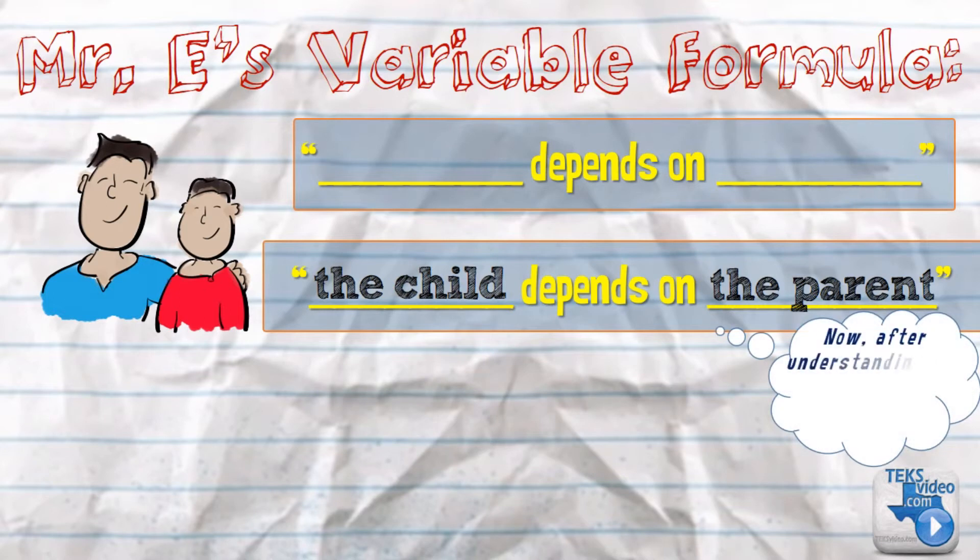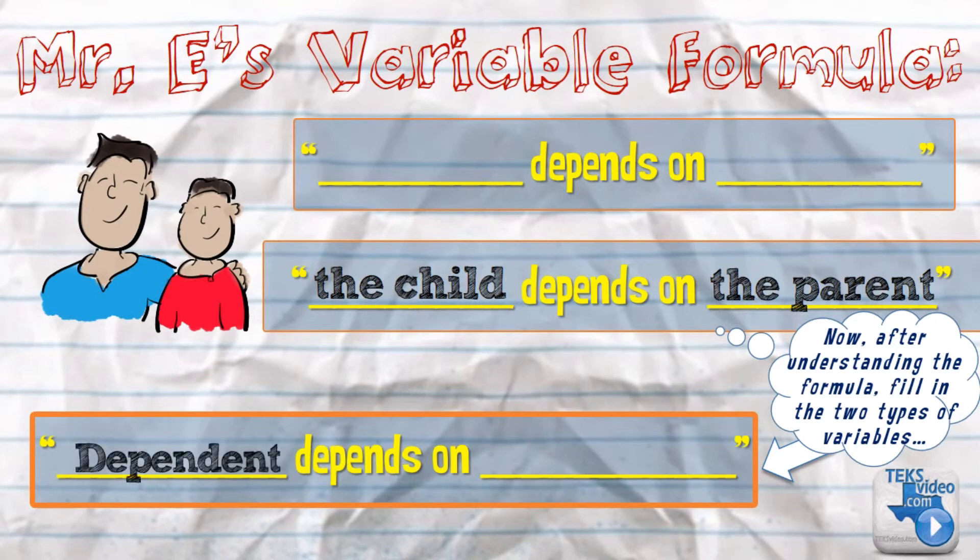Now, after understanding the formula, fill in the two types of variables. Dependent depends on independent.